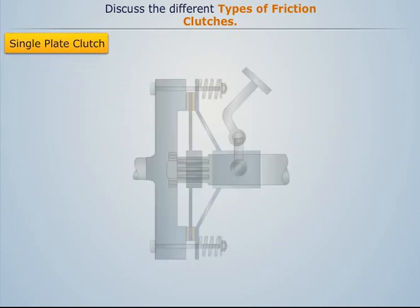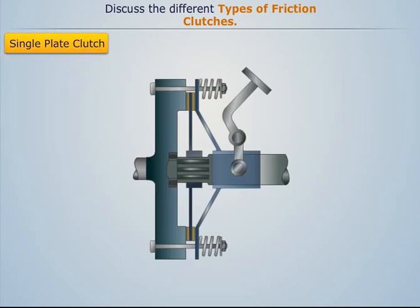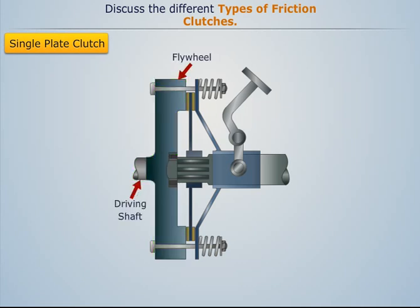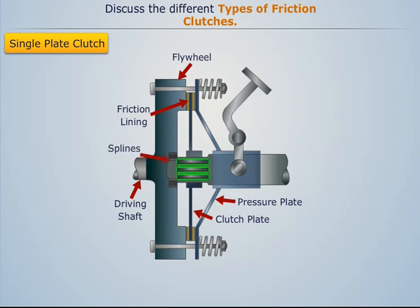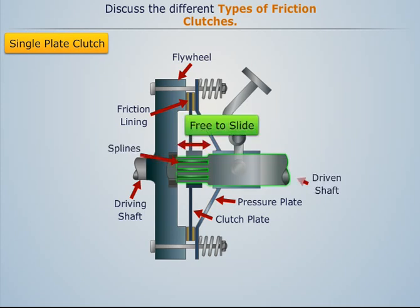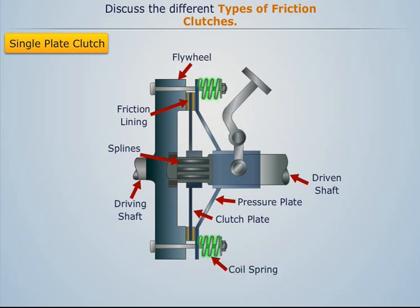Single plate clutch: A typical single plate clutch assembly shows that the flywheel is rigidly fixed to the engine shaft and the clutch plate is pressed between the flywheel and the pressure plate. The clutch plate has friction linings on both sides to provide two annular friction surfaces for power transmission. This clutch plate is mounted on a splined hub and is free to slide over the gearbox shaft. Coil springs are provided circumferentially on the pressure plate to provide axial force to keep the clutch in the engaged position.